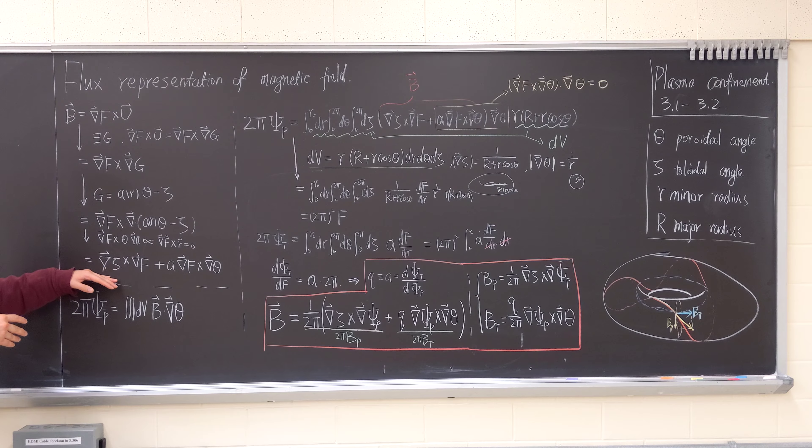Then we're left with this expression. Of course the cross product will flip and become negative. That's the case for this term, and then this becomes this.